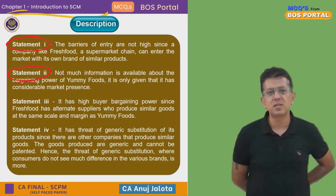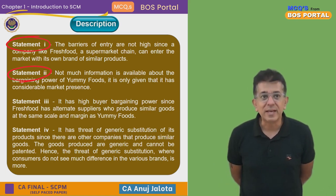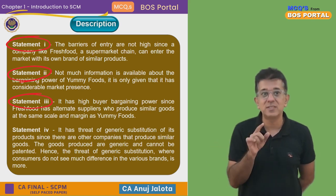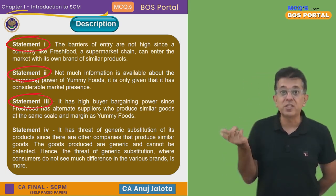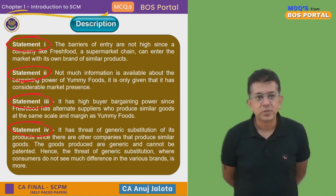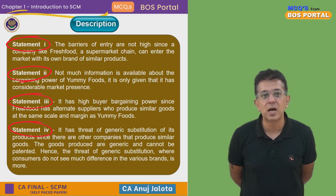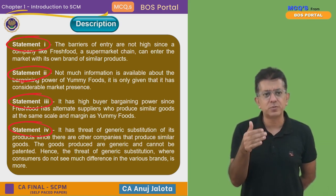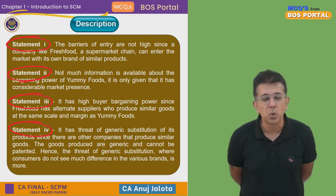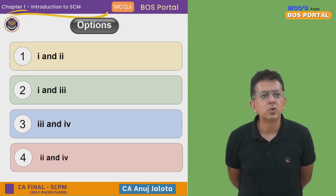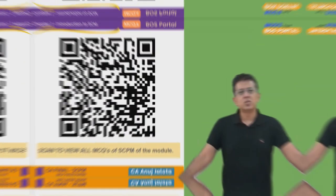Statement three is confirmed: it has high buyer bargaining power, since Fresh Foods has alternate suppliers who can produce similar products at the same scale and margin as Yummy Foods. Statement four is also confirmed: there is a threat of generic substitution, since other companies manufacture similar goods of a generic nature that cannot be patented, and customers do not see much difference across brands. Therefore, three and four are correct — that is the correct answer.